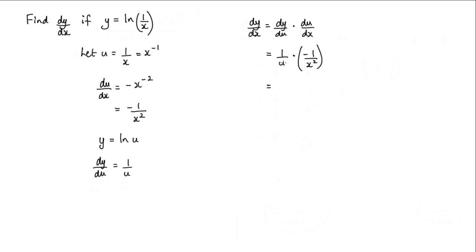Now 1 over u. Well, u is 1 over x. So we get 1 over 1 over x. That's multiplied by negative 1 over x squared. This term here, 1 divided by 1 over x, that actually simplifies to x. And that's multiplied by negative 1 over x squared.